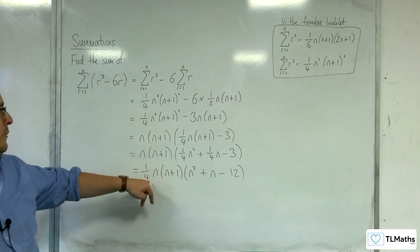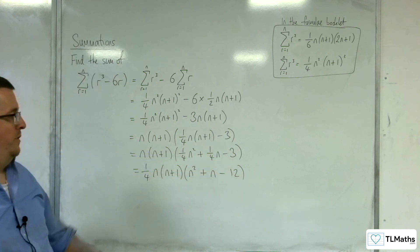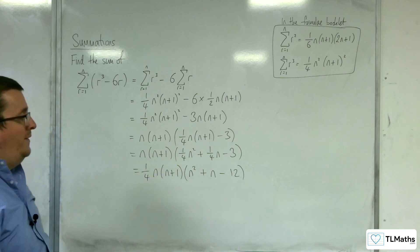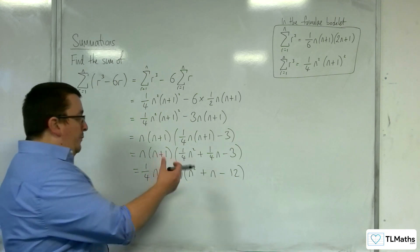12 lots of 1 quarter will make the 3. This bracket - always double check, can it be factorised? This one can.